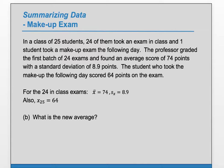What is the new average? Can we simply average 74 and 64? No, why not? They have different weights. The 74 is an average of 24 students. This is only an average of one student. So, we need to take a weighted average.